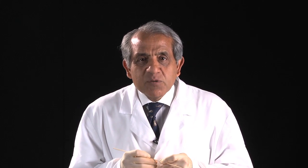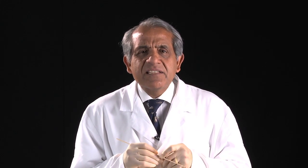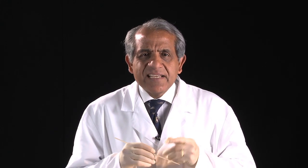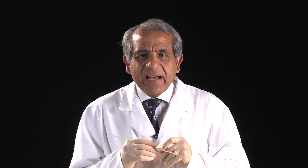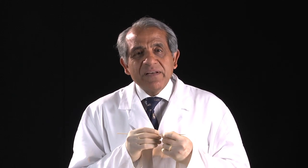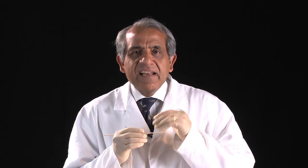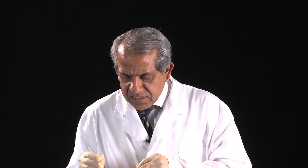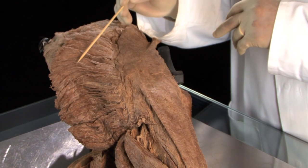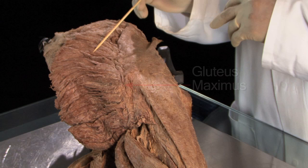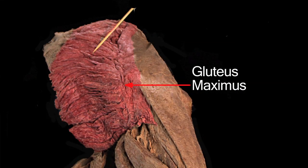The skin of the gluteal region is very coarse, and beneath it is abundant subcutaneous fat which contributes significantly to the contour of the buttock region. Beneath the subcutaneous fat is a thin layer of deep fascia, underneath which lies this very large, powerful muscle — gluteus maximus.